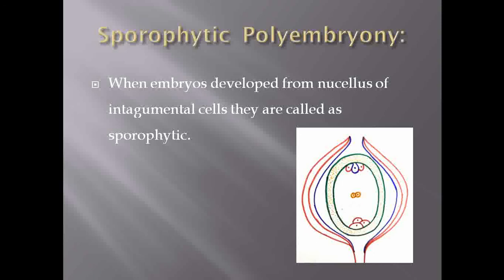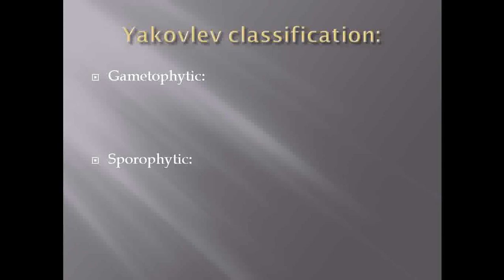We have completed the three types according to Rigor, Michelius, and Green. Now moving to the classification proposed by scientist Jacol. According to Jacol, polyembryony is divided into two types: gametophytic and sporophytic. Gametophytic means within the embryo sac there is a presence of gametes.